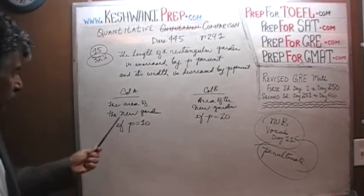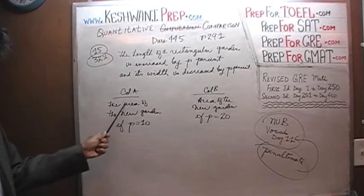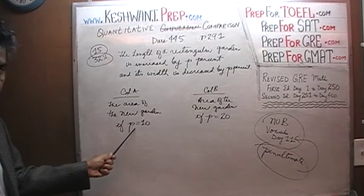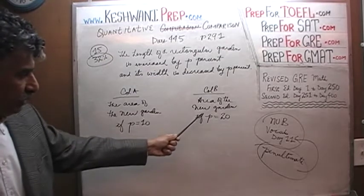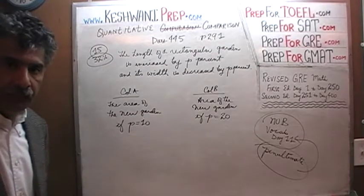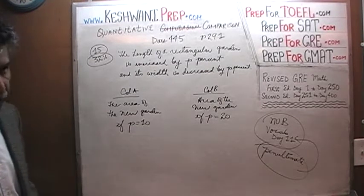Here's what we are being asked to compare. The area of the new garden if p happens to equal 10 versus the area of the new garden if p happens to be 20. I want you to pause the video at this point and do the problem yourself.